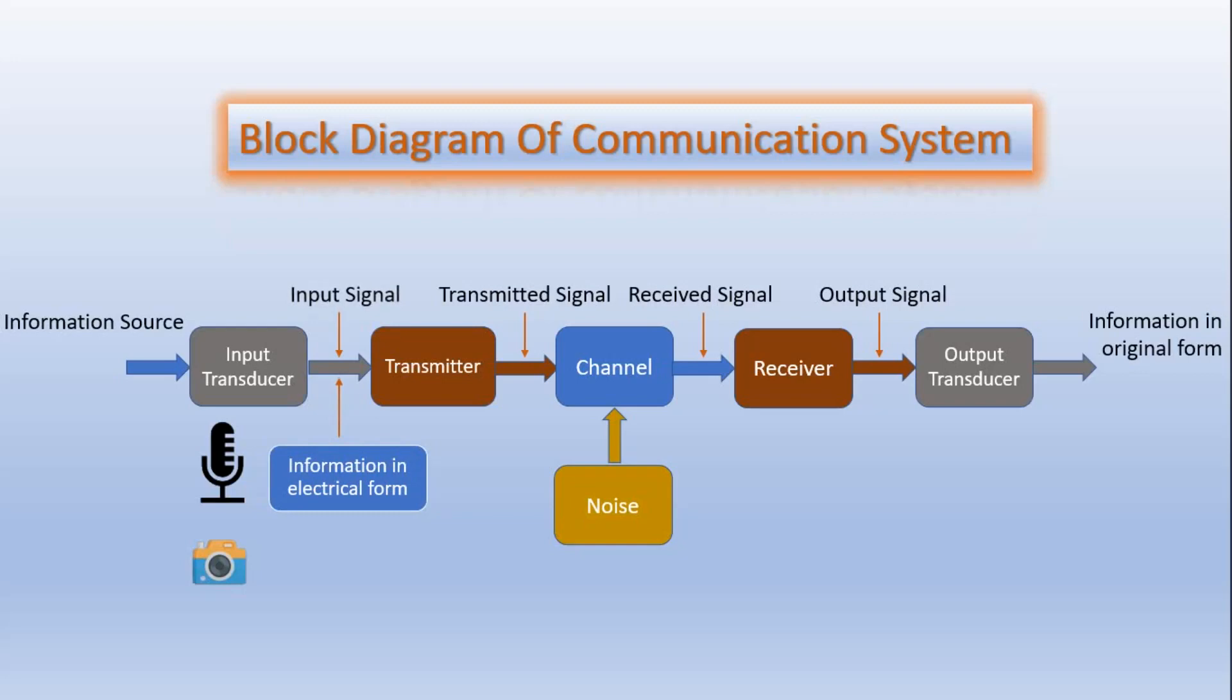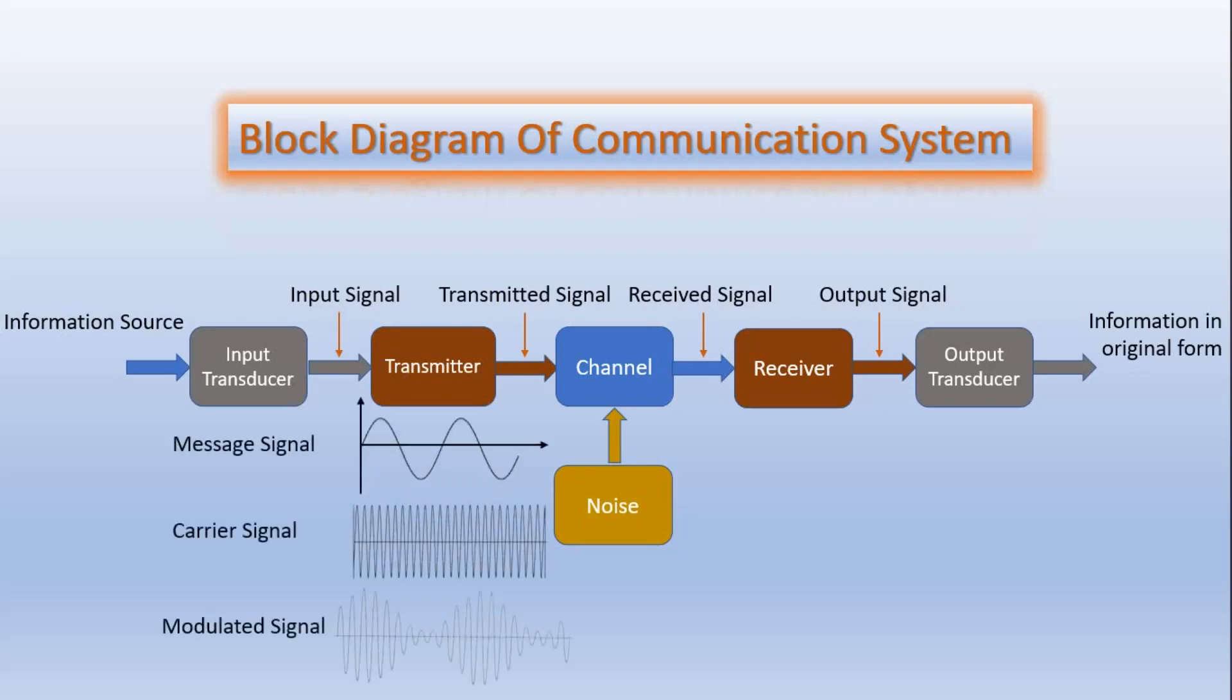Next part is the transmitter, where this input signal is given. The function of the transmitter is to process the electrical signal from different aspects. Modulation is the main function of the transmitter. In modulation, the message signal is superimposed upon the high frequency carrier signal.